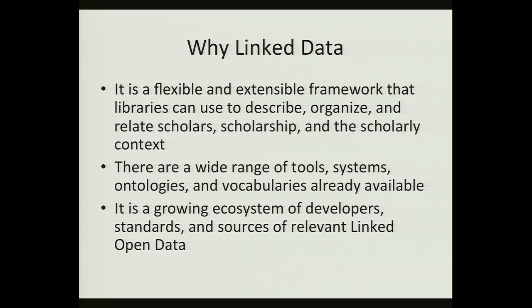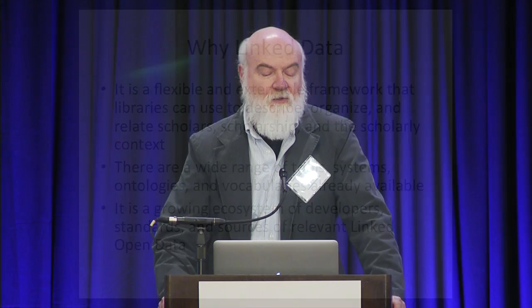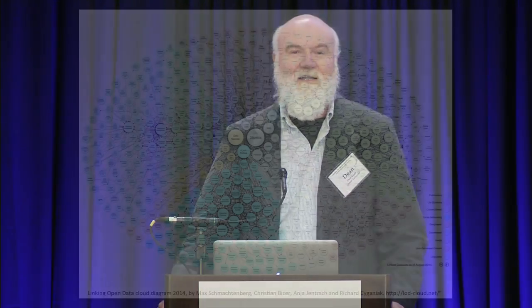Why do we choose linked data for this project? It's a flexible and extensible framework we can use to describe, organize, and relate scholars, scholarship, and the whole scholarly context. There are a wide range of tool systems, ontologies, and vocabularies already available in the linked data environment, and a growing ecosystem of developer standards and sources of relevant linked open data. Here's the 2014 instance of the linked data cloud — you can see how it's grown over the years. There's a lot of information out there we can potentially leverage and link to.